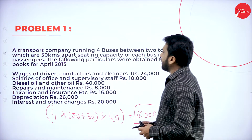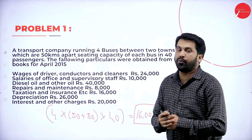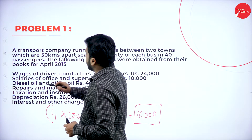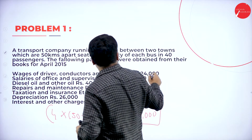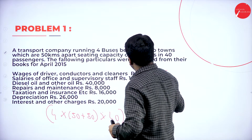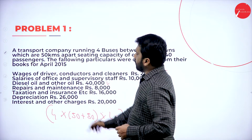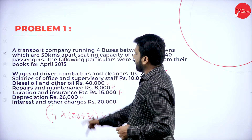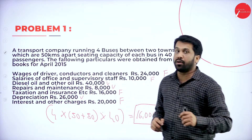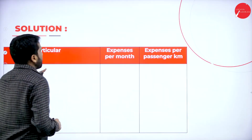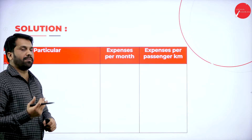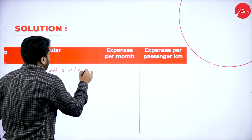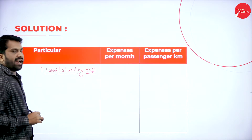Once you are done with this, all the given information — we have to bifurcate whether it is a fixed side or running expenses. Wages of driver and conductor: it is fixed. Salary of office: it is fixed. Diesel and oil: this is variable. Repair and maintenance: variable. Taxation: fixed. Depreciation: variable. Interest and other charges: it is fixed.